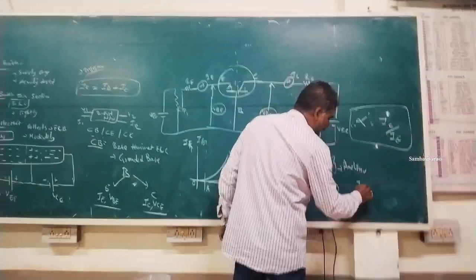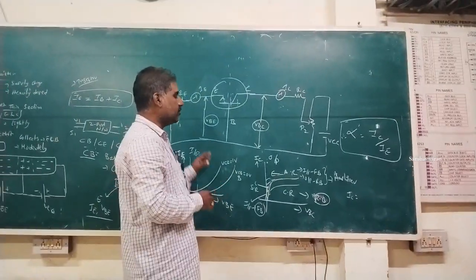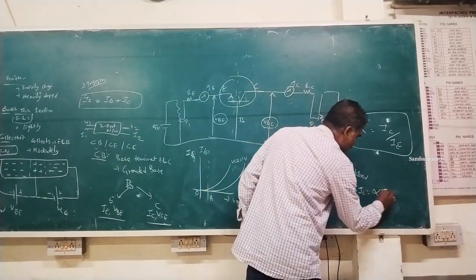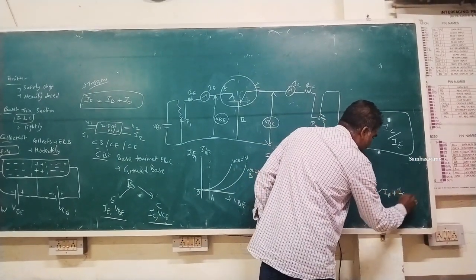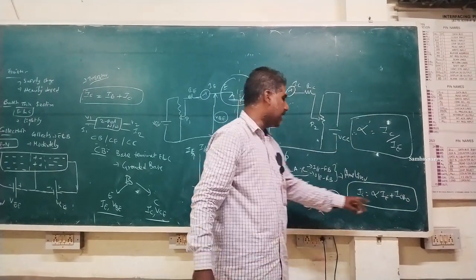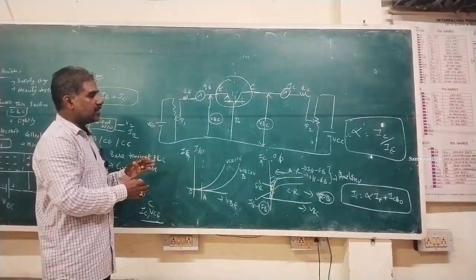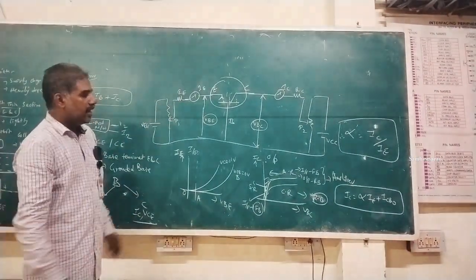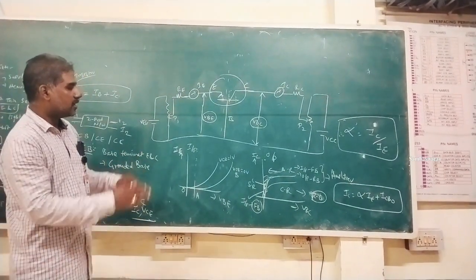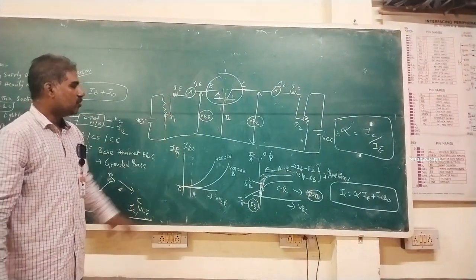The collector current equation shows how much of the emitter-base current is collected at the collector terminal. IC equals alpha times IE plus ICBO, where IC is collector current, IE is emitter current, and ICBO is the collector-to-base leakage current with emitter open. Part of the emitter current reaches the collector and is collected there.